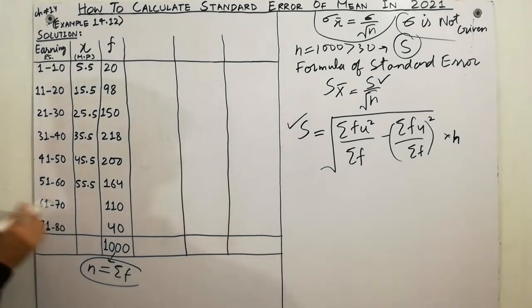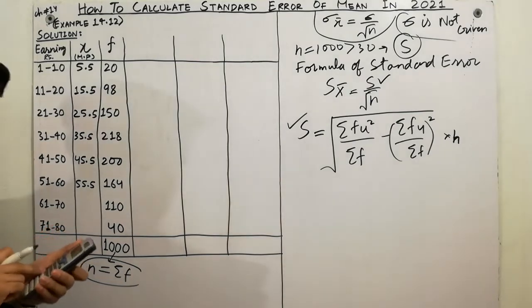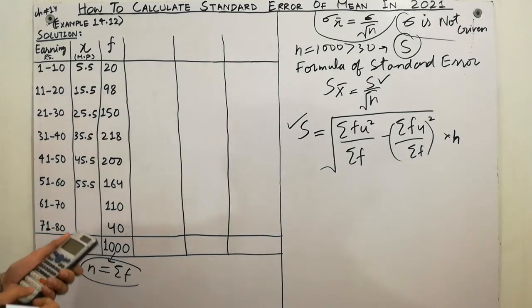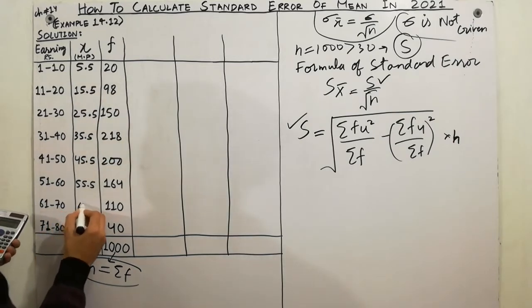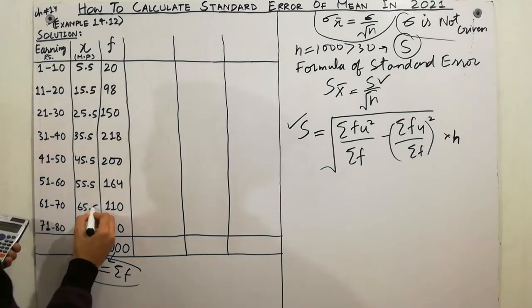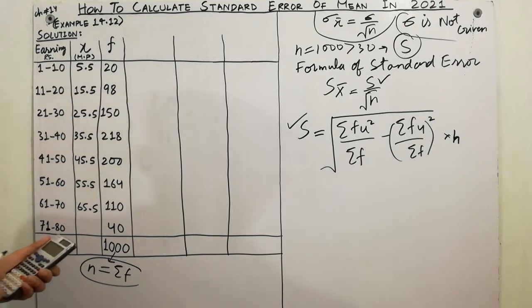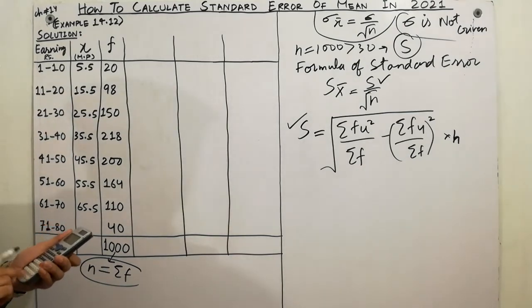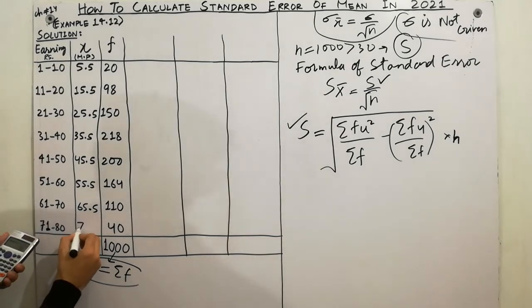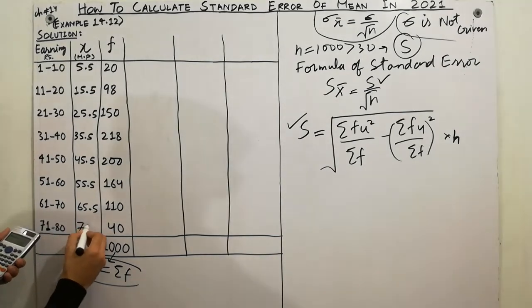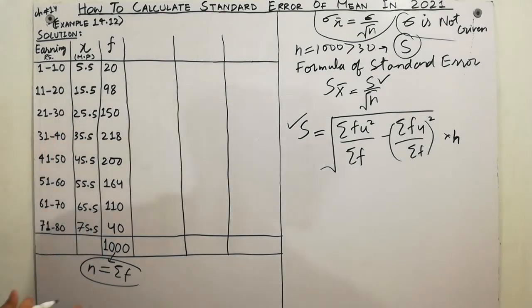Next, 61 plus 70, divided by 2, gives 65.5. And last, 71 plus 80, divided by 2, gives 75.5. So I have calculated all the midpoints.